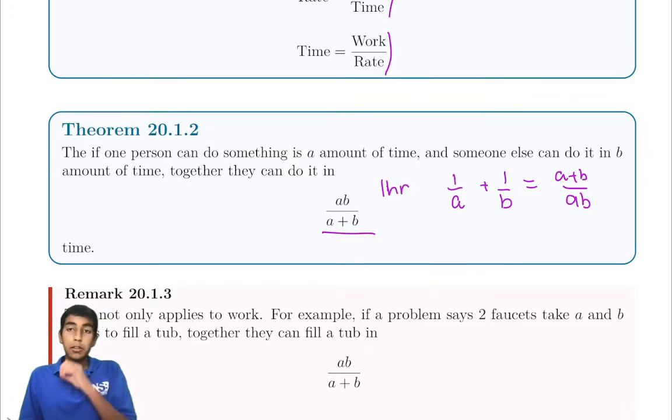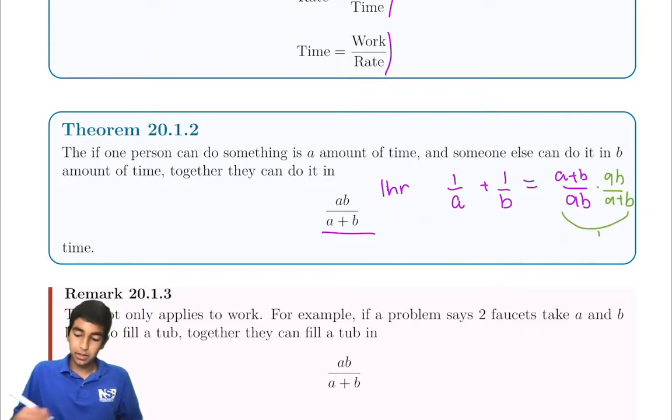But this is only A plus B over AB of the task. We need to complete the whole task. So we multiply by AB over A plus B to both sides. So now the whole task is complete, and the amount of time is just AB over A plus B. And this is that formula we're looking for.